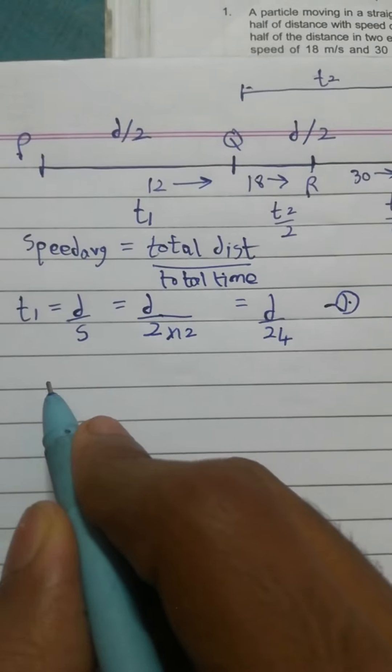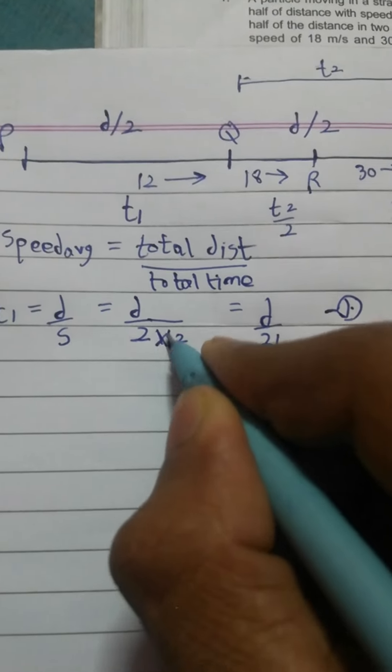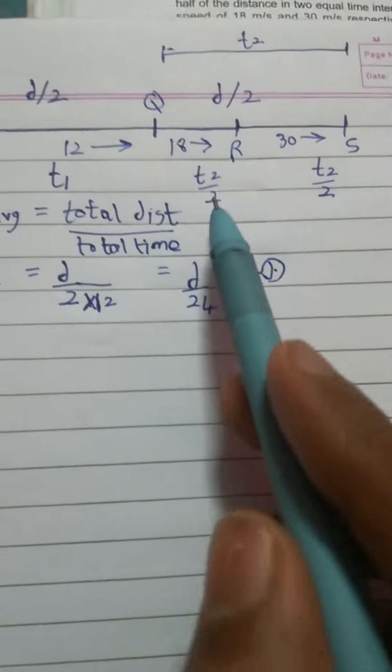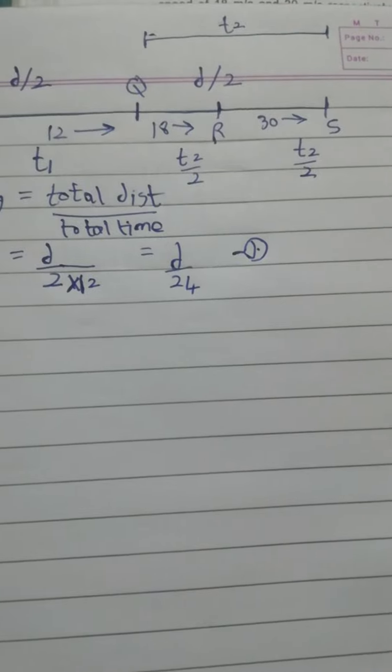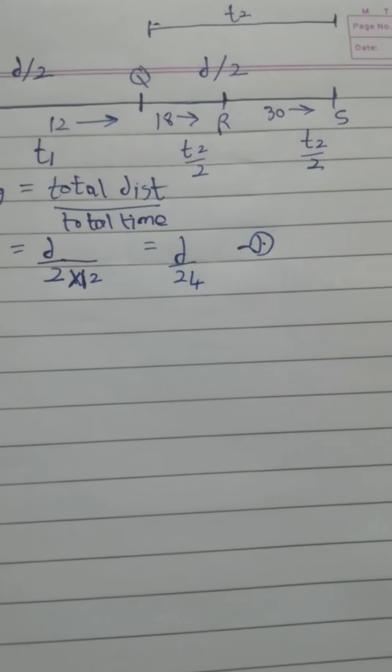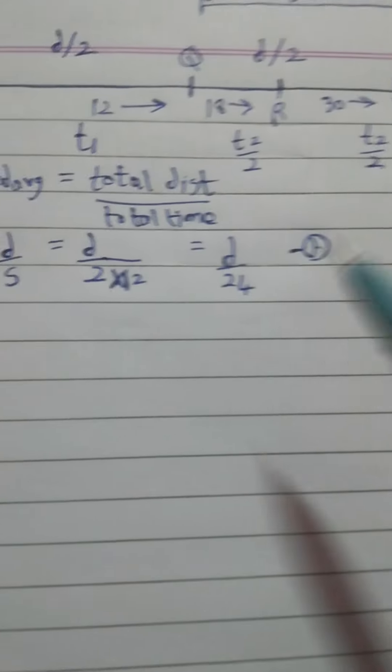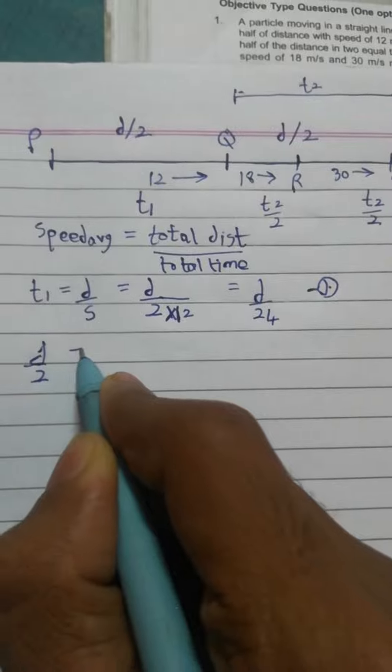Now we need to go further. We need to find the time T2. So we know that total distance here is D by 2 that's covered. So we know that here D by 2 can be represented as QR plus RS.